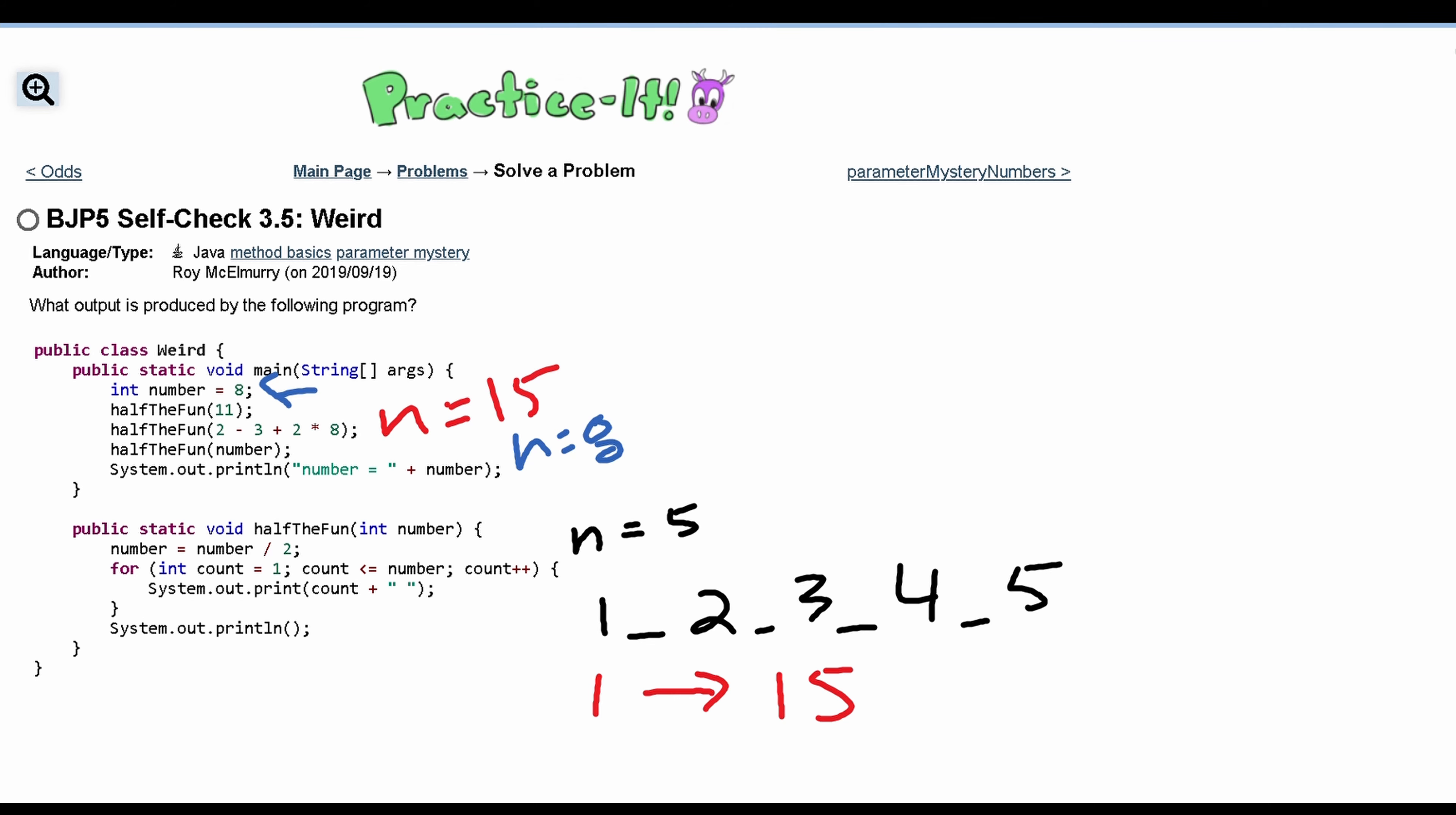And then we are going to print out this and in fact actually I made a mistake on the halfTheFun right here for the second line. This line I made a mistake right here. It should actually not be 1 to 15.